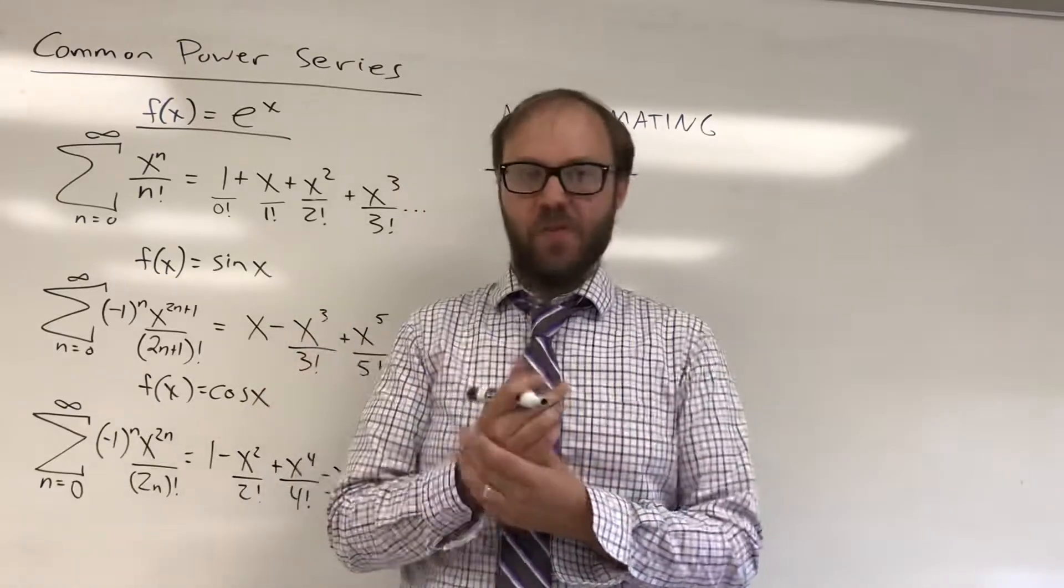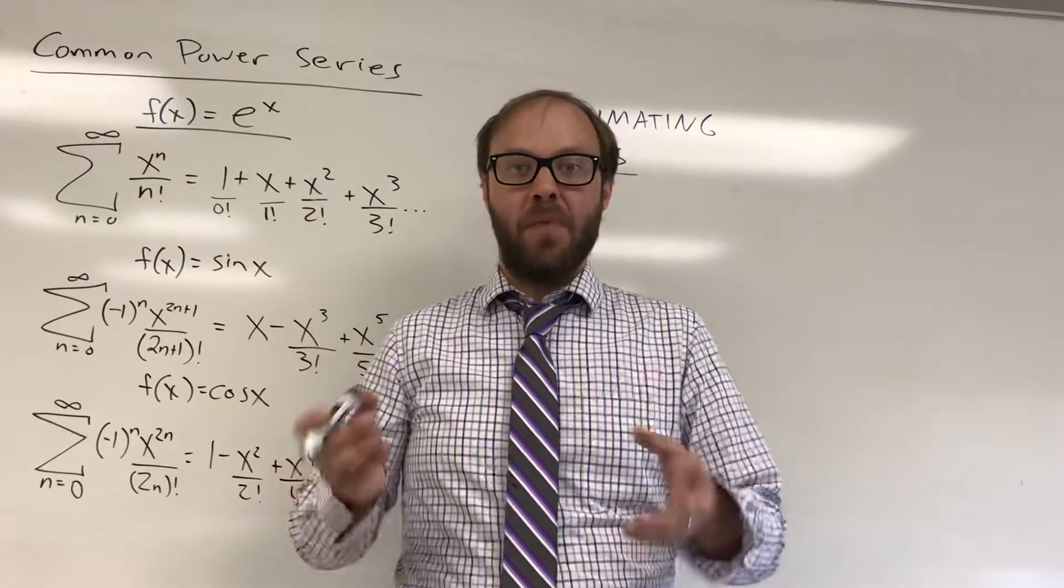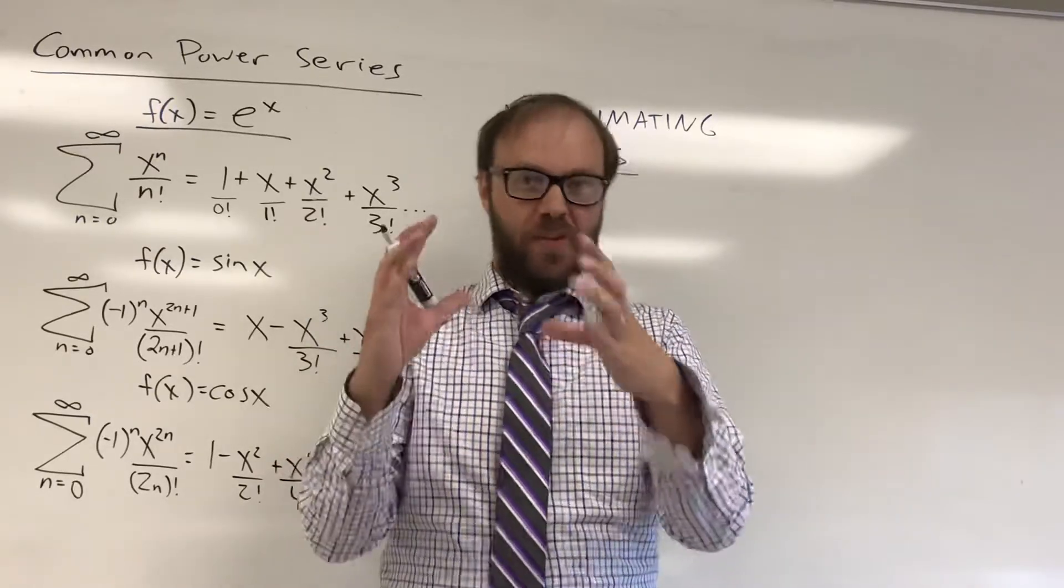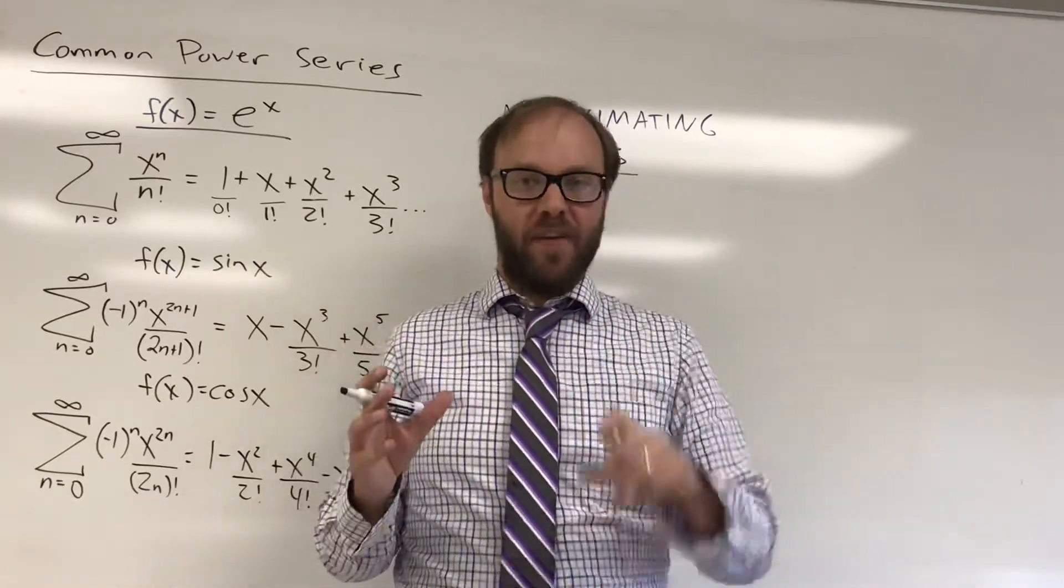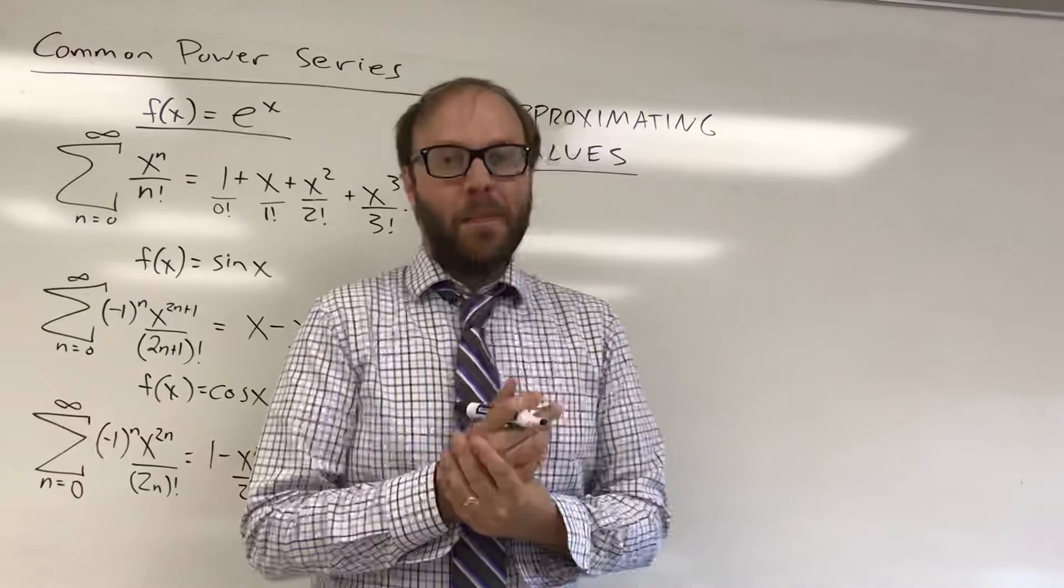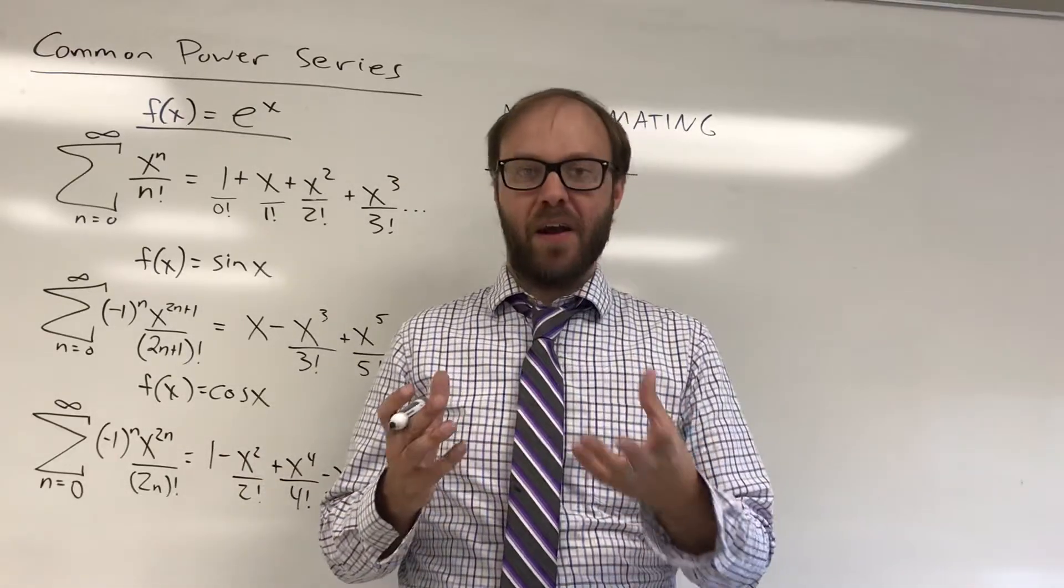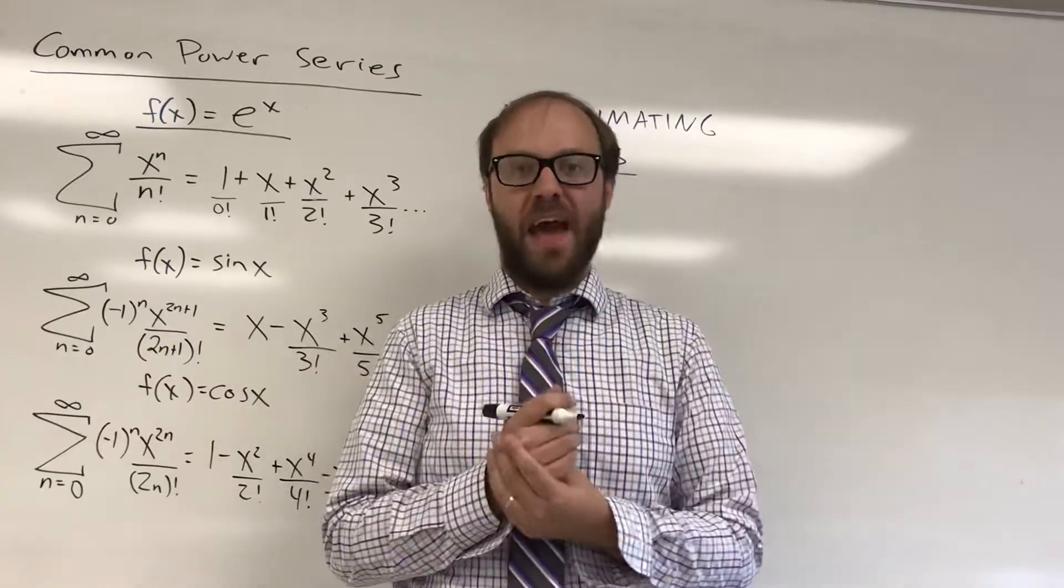So one of the examples I gave was, normally in a pre-calc class we would take the sine of 75 by breaking it up into the sine of 30 plus 45 and use the trig sum identity to try to figure out the exact value. But obviously that's going to be really complicated to try to find some kind of combination of trig identities to find the sine of 61.23 or something like that.